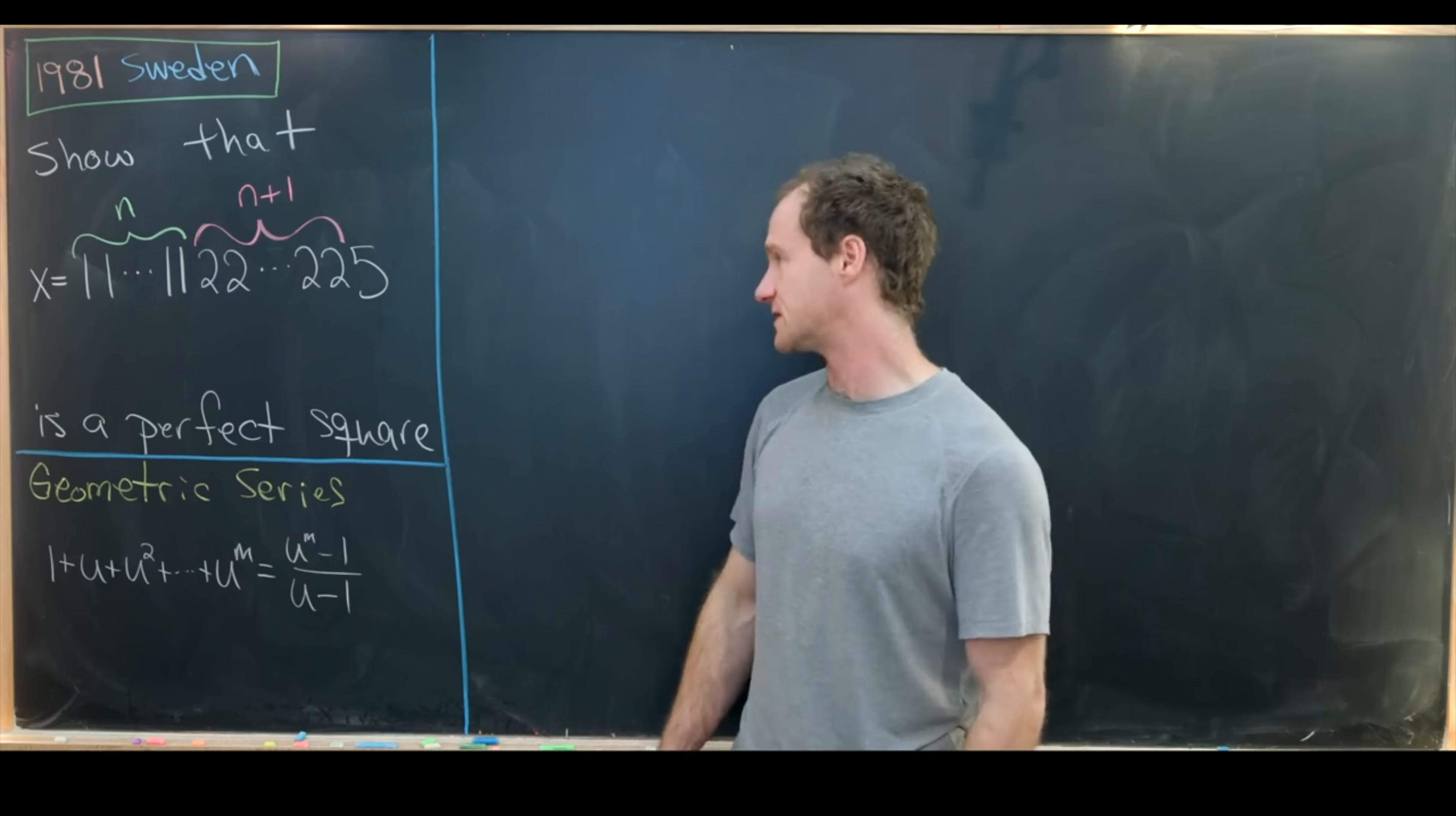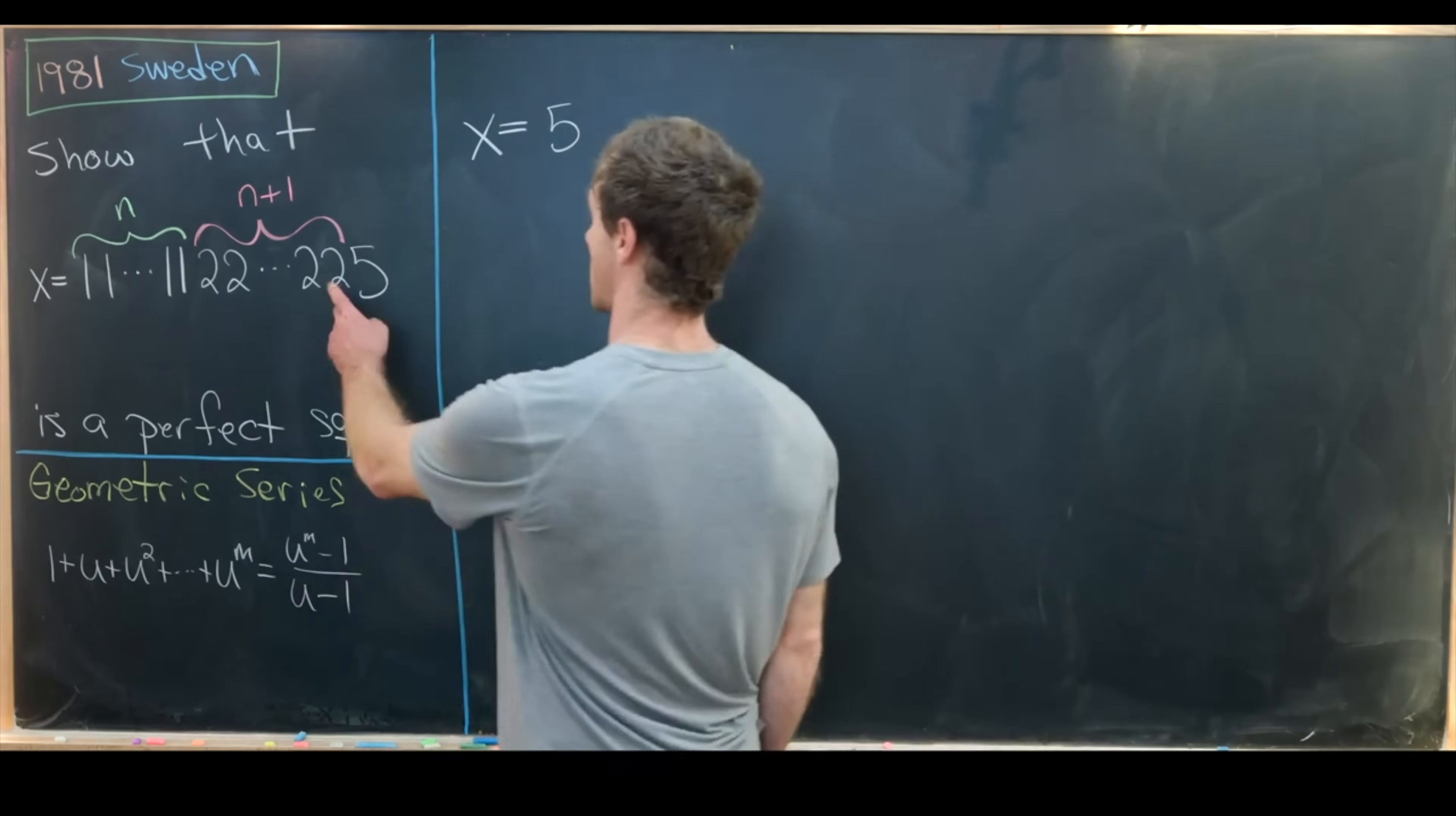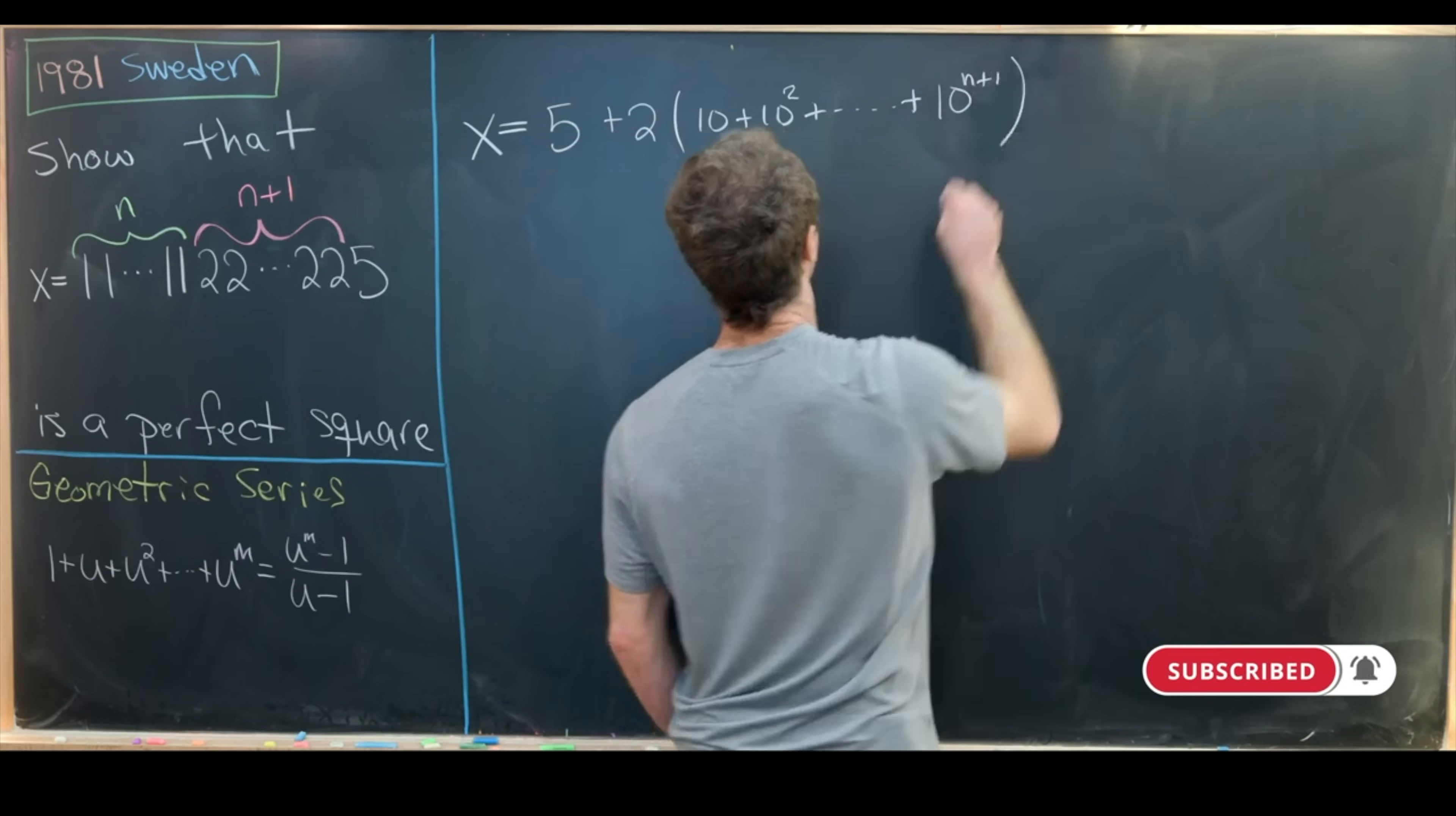Okay, so let's jump into the solution. I'm going to take my number x and first rewrite it taking advantage of the repeating digits. So I'll start with 5 for the ones digit, then I'll have the tens digit which is 2×10 all the way up to the n+1st digit. So that'll be plus 2×10 + 10² all the way up to 10^(n+1).